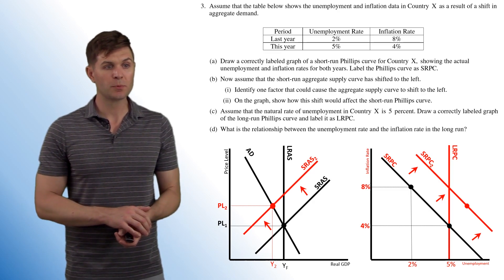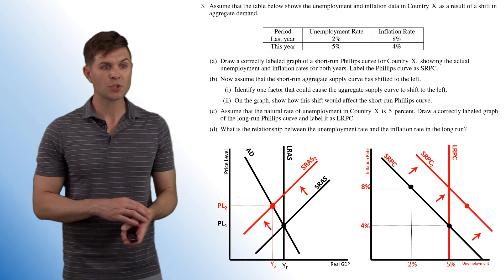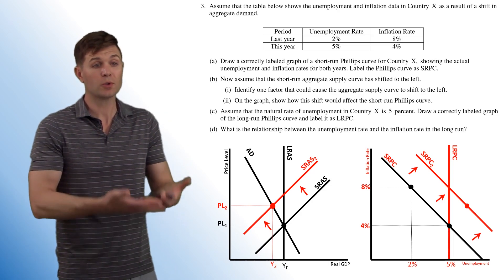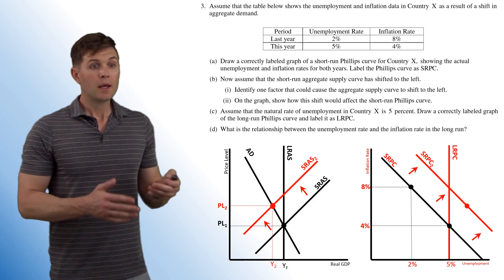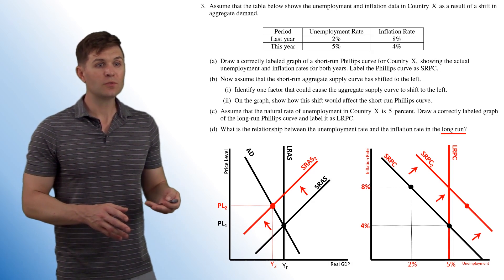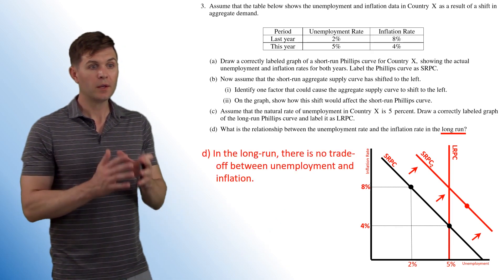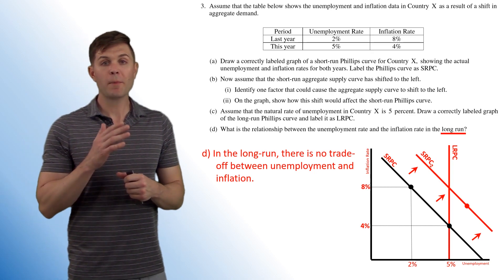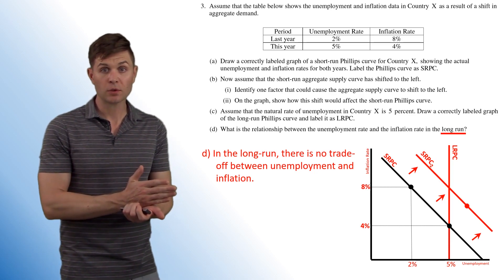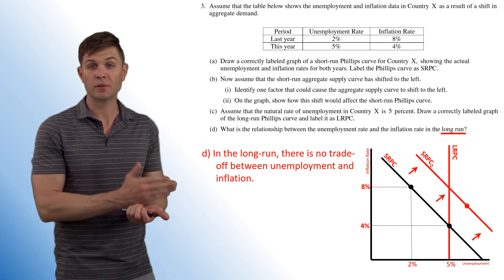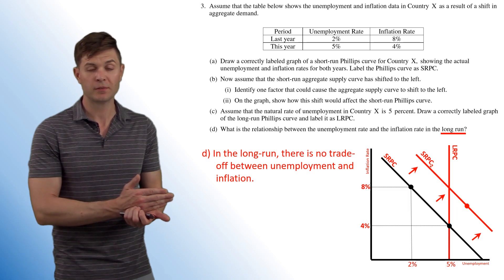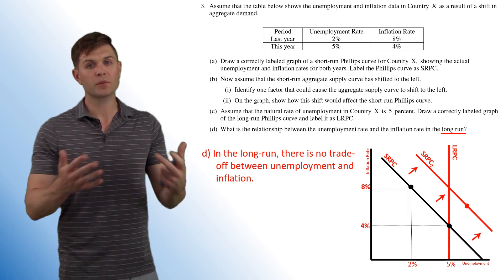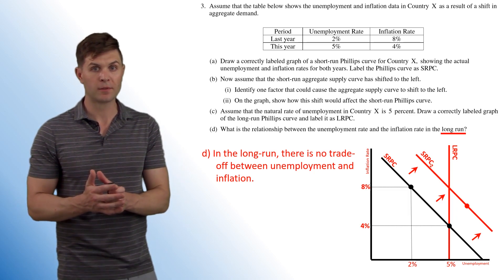Last one. What is the relationship between the unemployment rate and the inflation rate in the long run? So because this is a vertical curve here or vertical line, the LRPC, there really is no relationship in the long run. There's no trade-off between the two. So no matter what happens in the long run, our unemployment rate is going to stay at the natural rate, or 5% in this case, no matter what happens. And that's because of those auto adjustments that occur in the long run. Over time it will kind of always come back to this point.